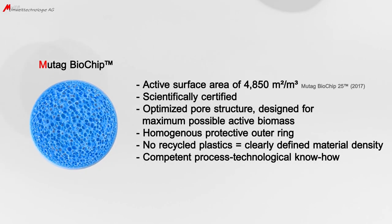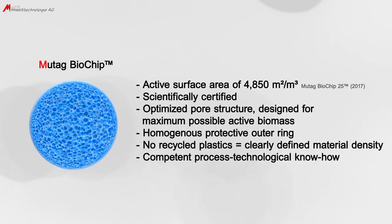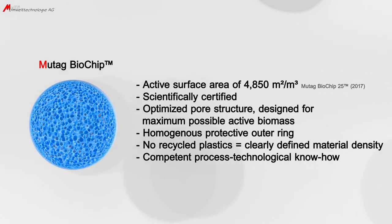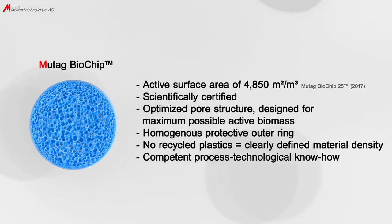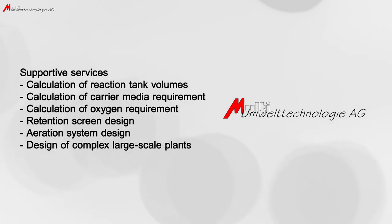To summarize, we would like to name some further advantages. The Mutag Biochip provides an active surface area of 4,850 square meters per cubic meter. Due to the optimized pore structure, the Mutag Biochip can attach a manifold of active biomass compared to other foamed carriers. The Mutag Biochip is made from virgin PE, whereby its density and quality are controllable. Mutag staff have gained more than 20 years of experience in biological water treatment, and their process know-how was the basis for the development of the Mutag Biochip.